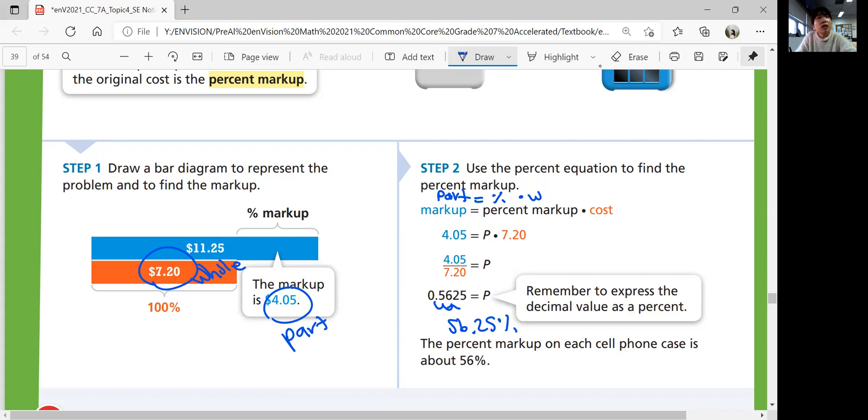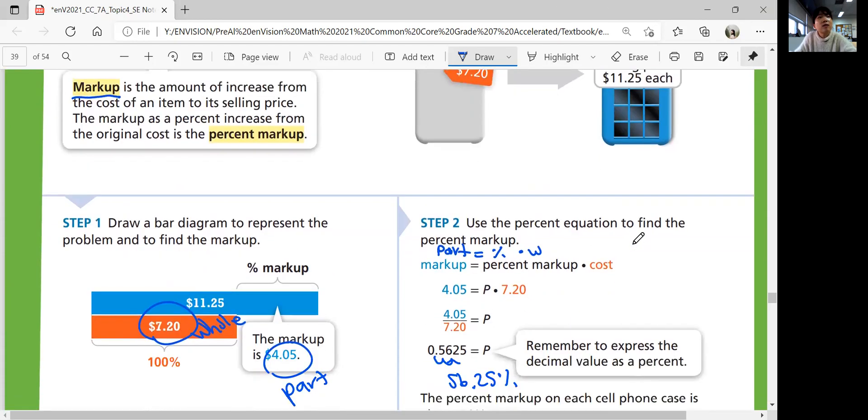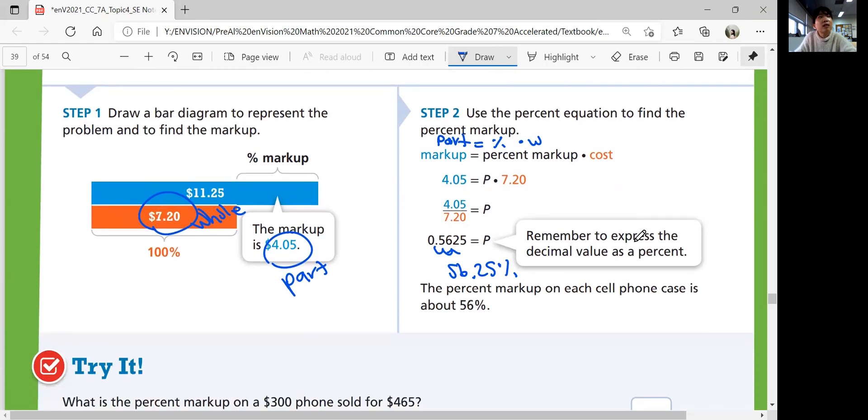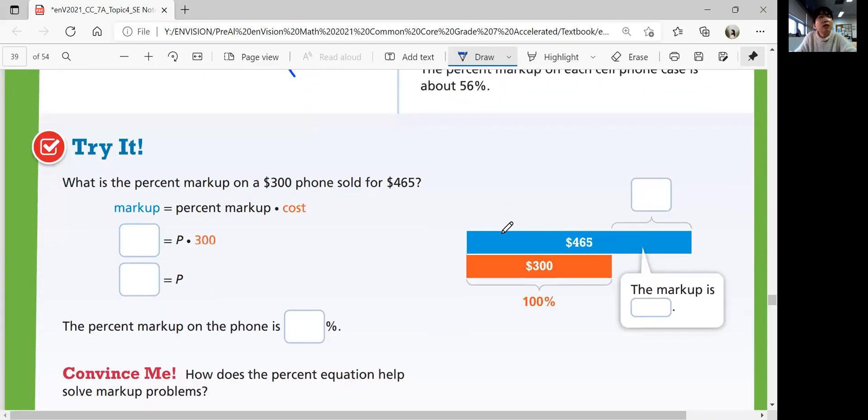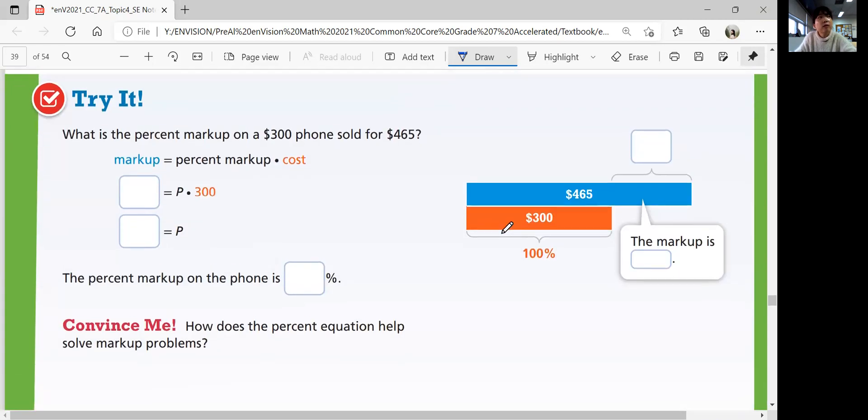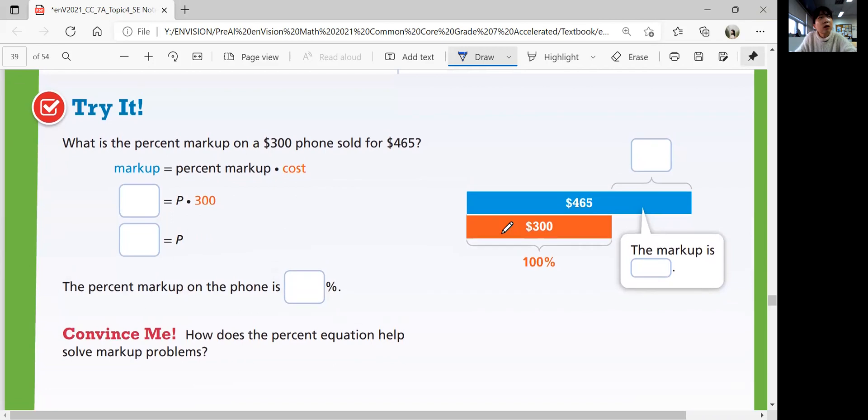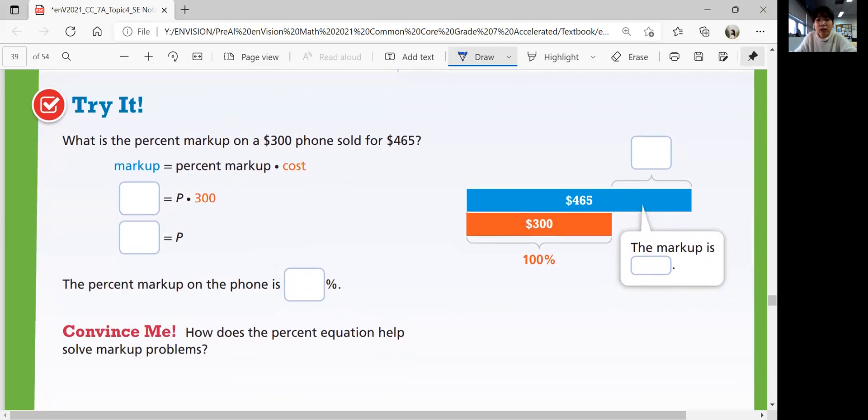She paid $7.20, but she's going to sell it again with 56.25% more price. Let's try the question by yourself and see if you get it. Come back when you are ready for answers.